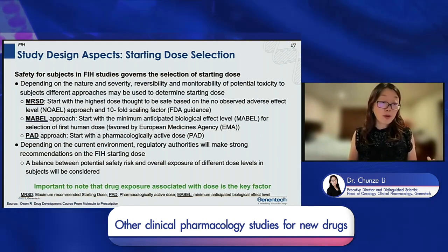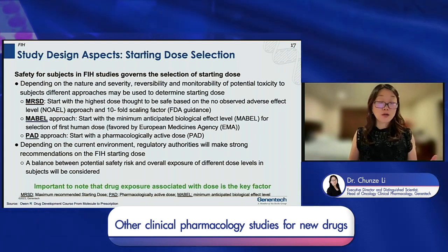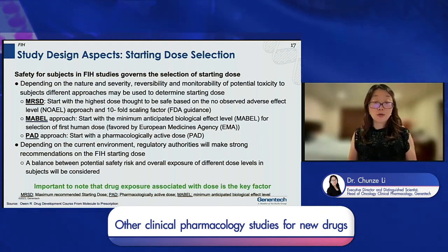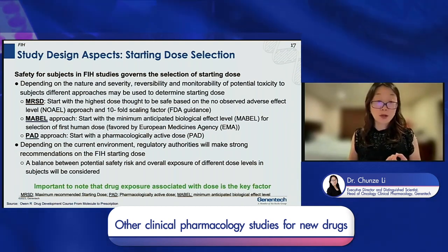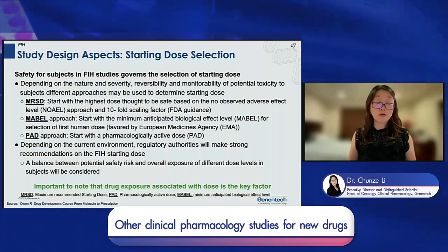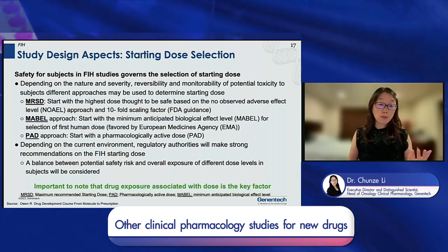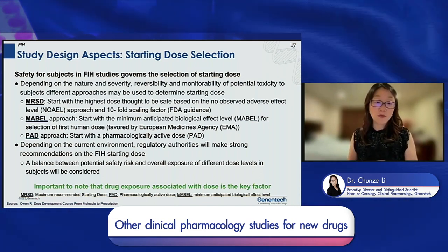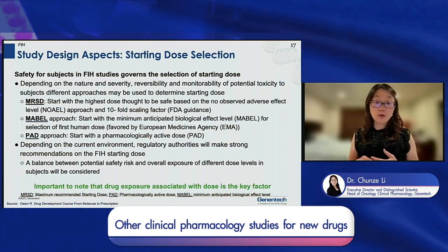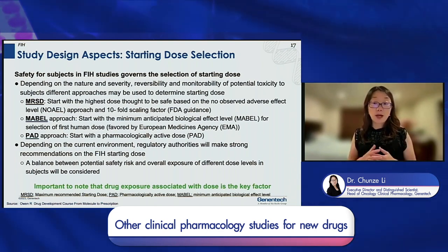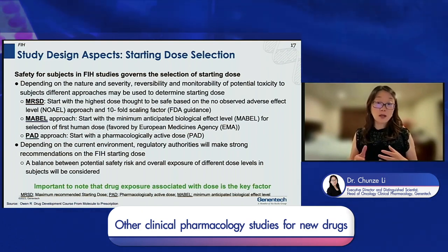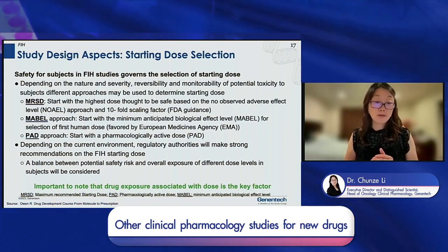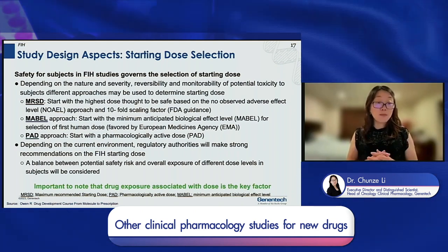There are three different methods. The first is MRSD — Maximum Recommended Starting Dose — based on FDA guidance. We calculate the highest starting dose believed to be safe based on the non-clinical GLP tox study NOAEL (non-observed adverse effect level), and usually apply a tenfold safety scaling factor to determine the MRSD. The second approach is the MABEL approach — Minimum Anticipated Biological Effect Level — which is favored by European health authorities and can be based on in vitro assays, sensitive assays, or in vivo activities.